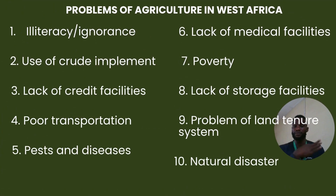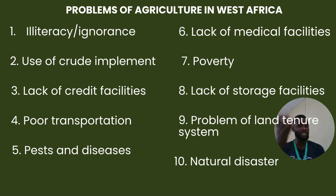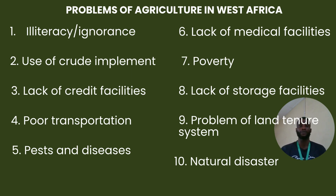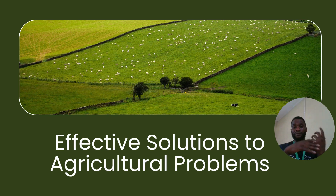Other problems of agriculture in West Africa include: illiteracy and ignorance of farmers, still making use of crude implements, lack of credit facilities, poor transportation systems to move commodities to the market, pest and diseases affecting large numbers of farmers, lack of medical facilities in farming areas, poverty, lack of storage facilities, problems of land use systems, and natural disasters such as earthquakes. All these are problems of agriculture in West Africa.